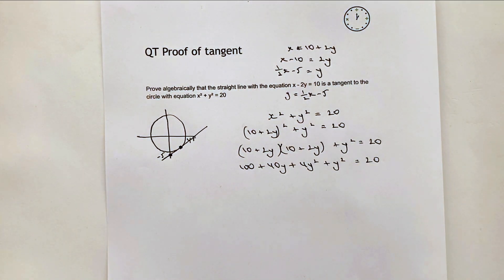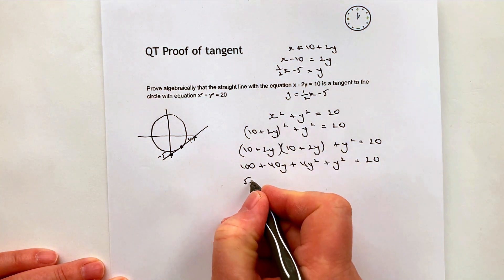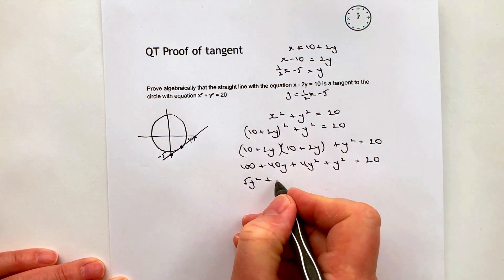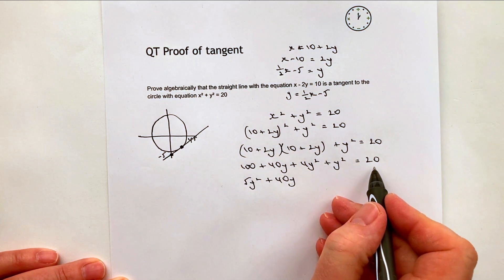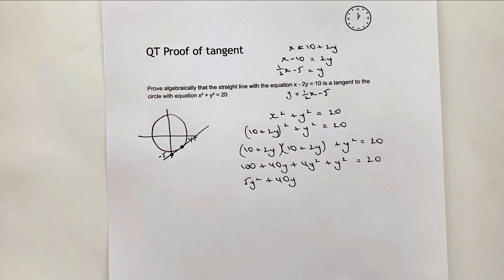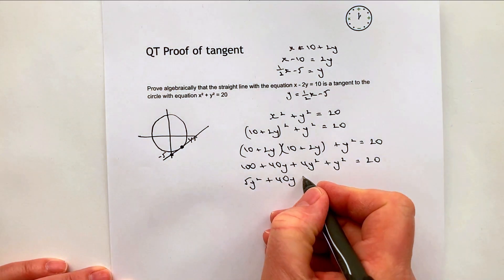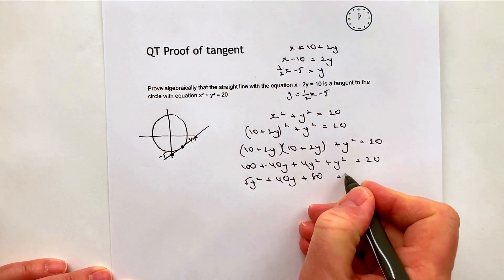Now I can see that all of these are going to be divisible through by 5. So let's put them into ascending order. I bring these two together, I'm going to get 5y squared plus 40y. I've got 100 here and 20 here. When you're factorizing, you need to make it equal to 0. So if I bring the 20 over, I'm going to get plus 80 equals 0.